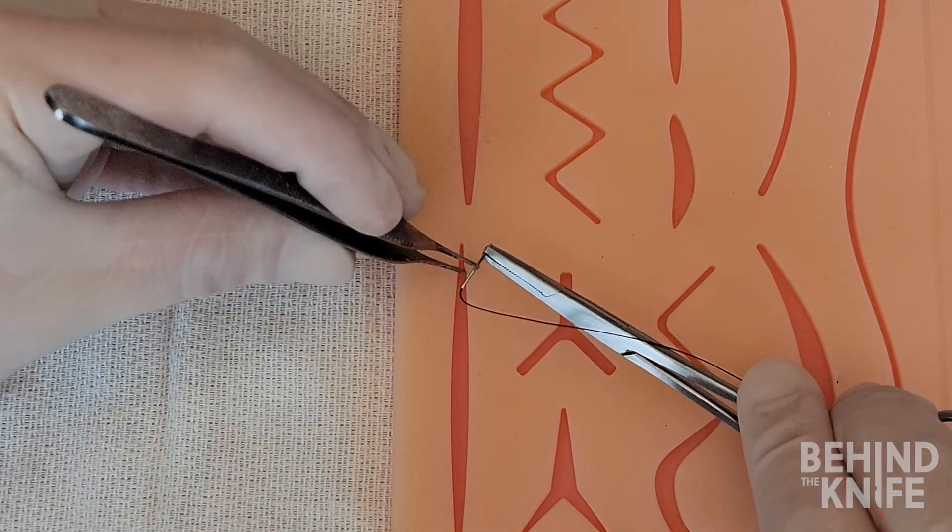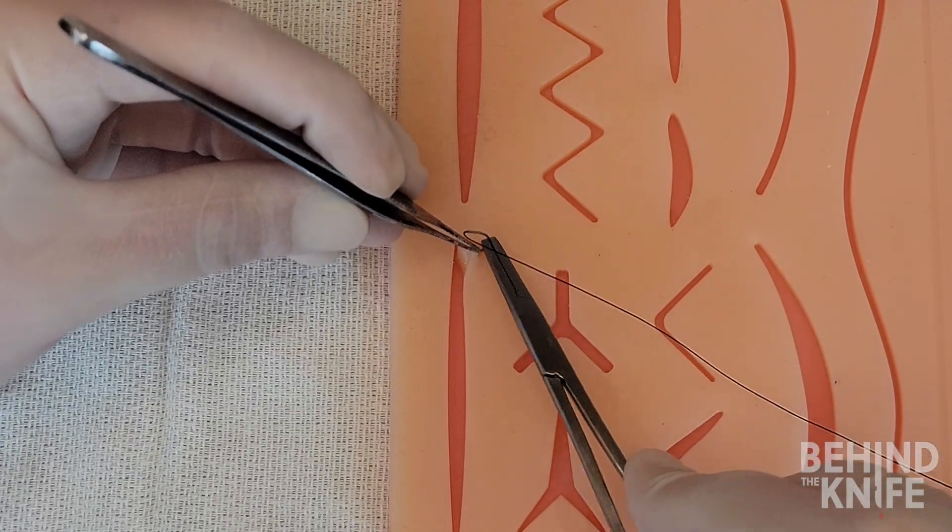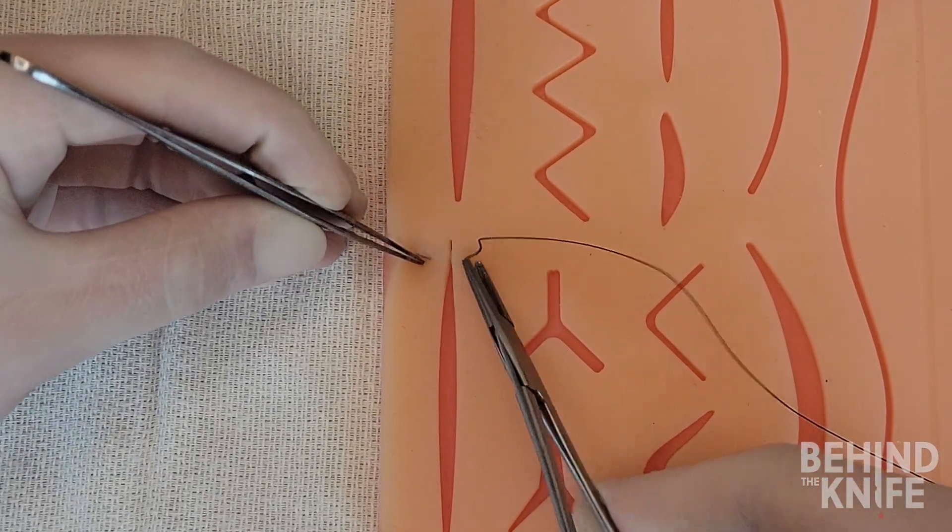The suture is a variation of the horizontal mattress suture and we will start the same way by placing a simple suture across the wound.